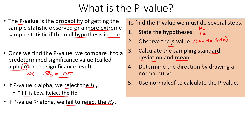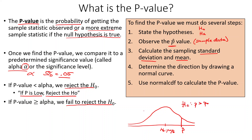Then we determine the direction by drawing the normal curve. Our null hypothesis value will be in the middle — that's p equals p-naught — which is the mean. At some point we'll have our p-hat value, either above or below, depending on whether the alternative is that p is greater than or less than something. Then we find the probability of being at that point or farther away using normal CDF.